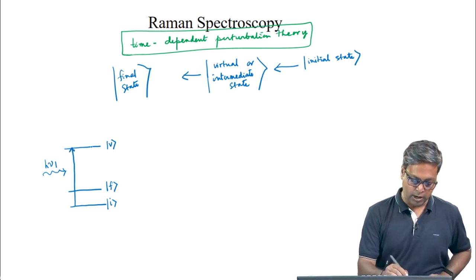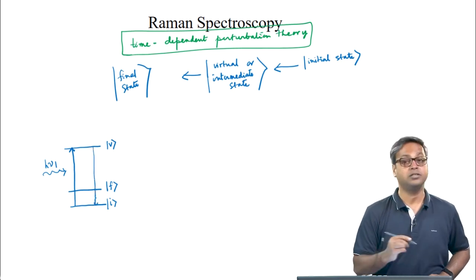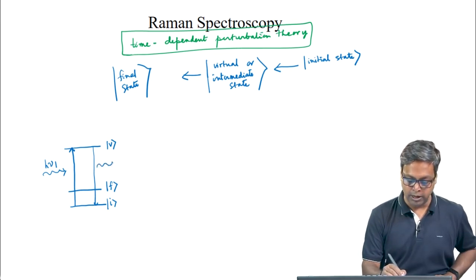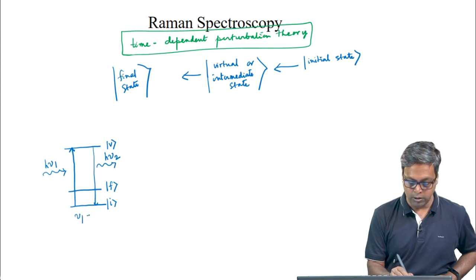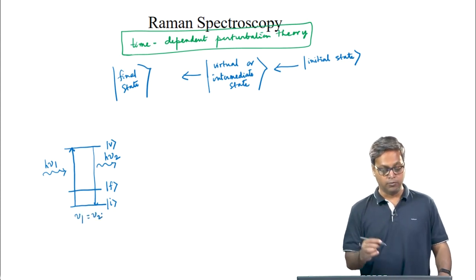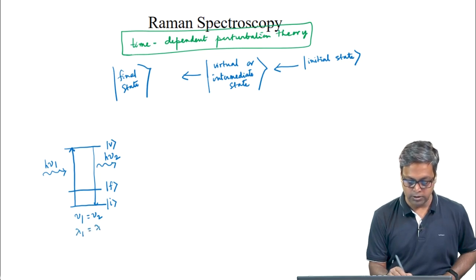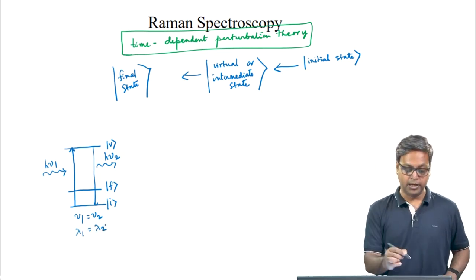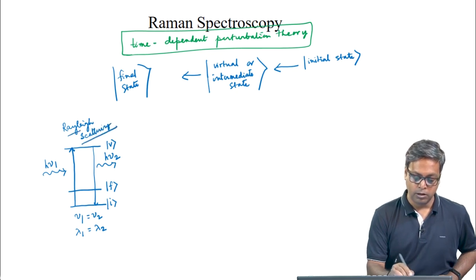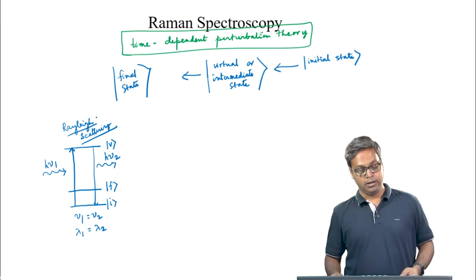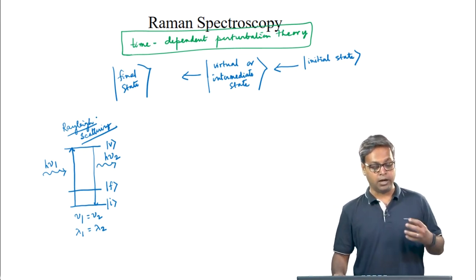However, if it does not come back to the final state but comes back directly to the initial state, then the energy released is hν₂, and we can write ν₁ = ν₂, or in other words λ₁ = λ₂. This is the case for Rayleigh scattering, because the incident light wavelength equals the scattered light wavelength.